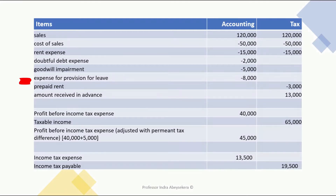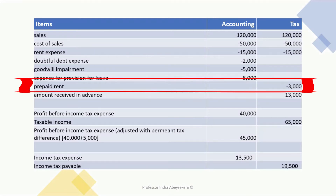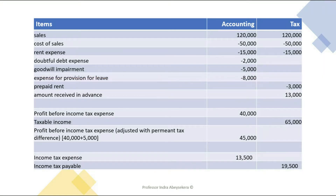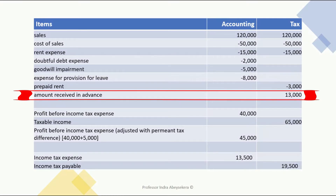Expense for provision for leave of $8,000 is not deductible for tax — it is a notional expense. Prepaid rent is an asset for accounting and is shown on the balance sheet, but it is a cash deduction or deductible expense for tax, as it occurred during this period. Amount received in cash is unearned earnings for accounting, shown as a liability on the balance sheet, but for tax it is assessable income upon receiving cash during this period.